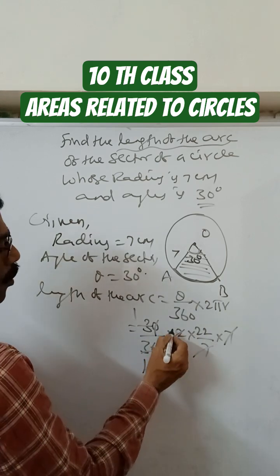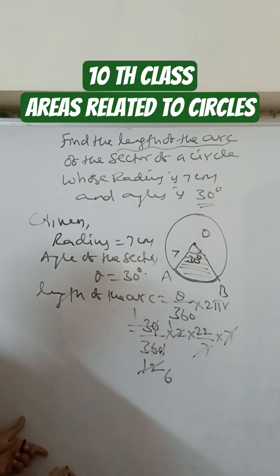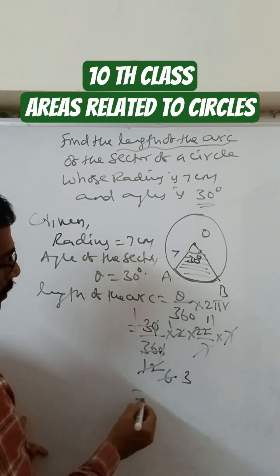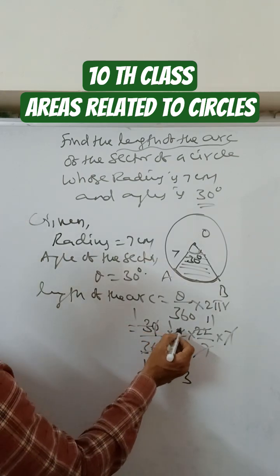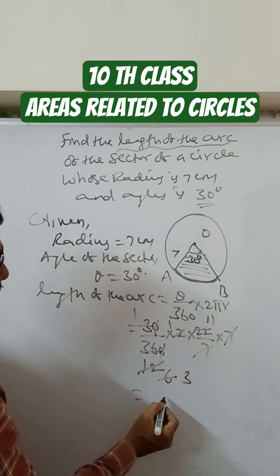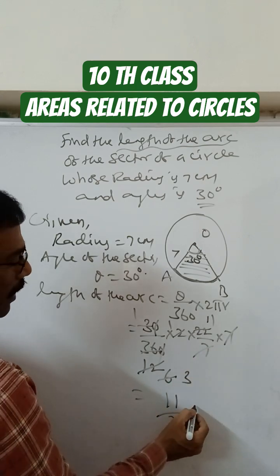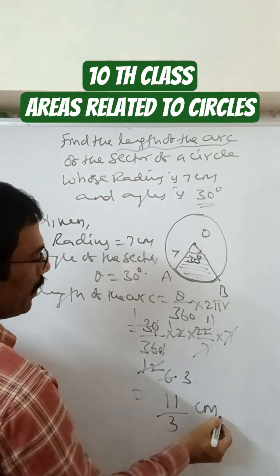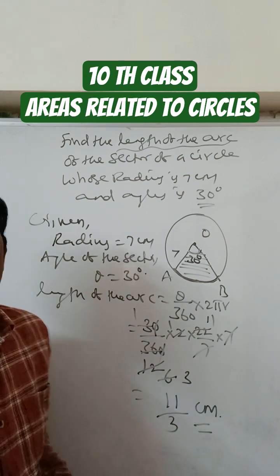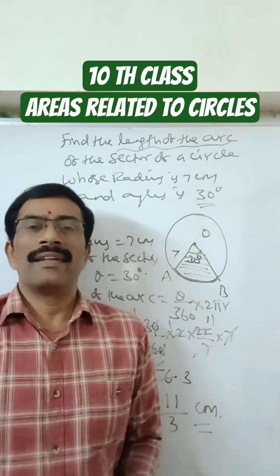Okay, two into one, two into six. Again, two into eleven, two into three. So here in the numerator we have only 11, in the denominator we have only 3. So 11 by 3 centimeters.